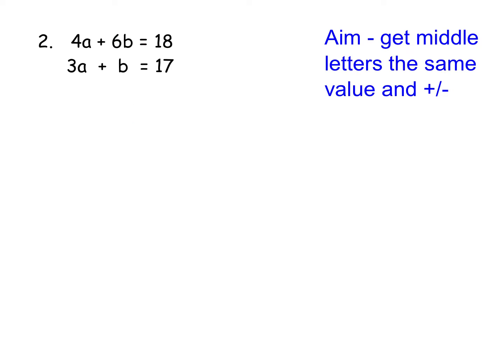Let's make them harder now — ones where the middle terms are not the same. Our aim is to get the middle two of the same value, one plus and one minus. I've got a 6b and a b, so my obvious thing to do is turn the bottom one into a 6 by multiplying by 6. But I also don't have a minus, and the easiest way to create a negative is to multiply by a negative. So I times the whole equation through by negative 6. Even if you multiply an equation by the same number throughout, it's still the same equation.